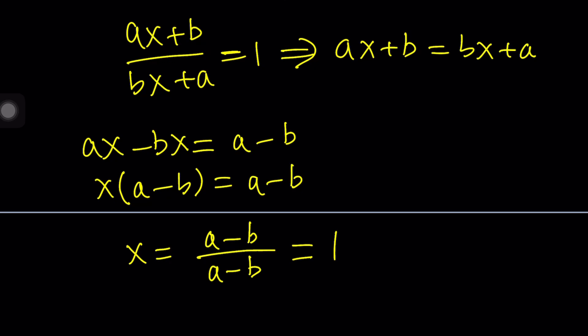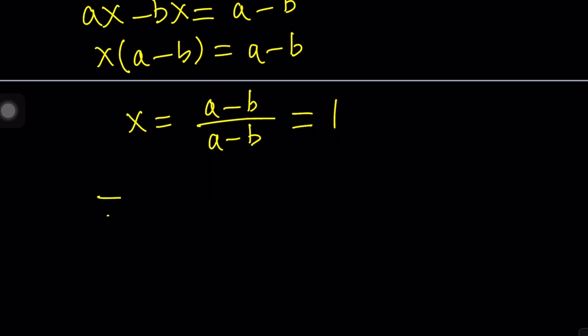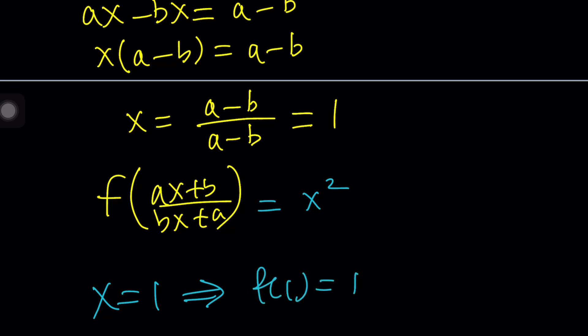What's that supposed to mean? It means you're supposed to set x equal to 1 if you're trying to get f of 1. That kind of makes sense because if you think about it, we have f of (ax+b)/(bx+a). If you replace x with 1, you're going to get (a+b)/(b+a), which is 1. That should give you f of 1. So you're going to replace x with 1, that's going to give you f of 1 equals 1 squared, which is 1.